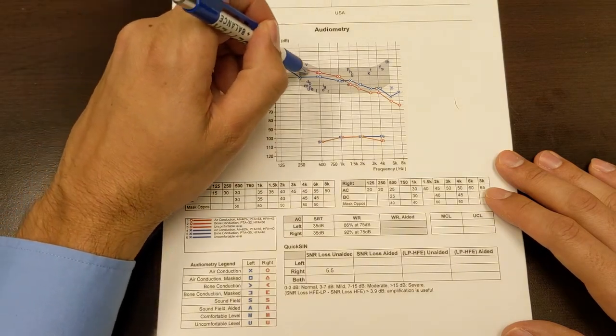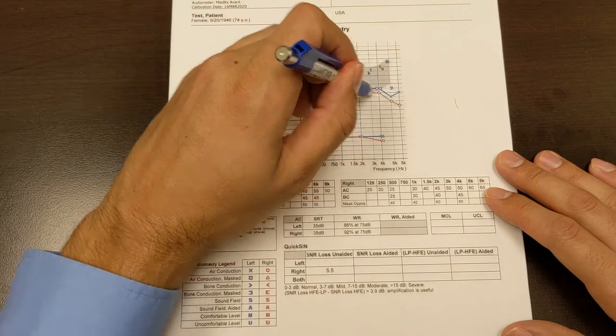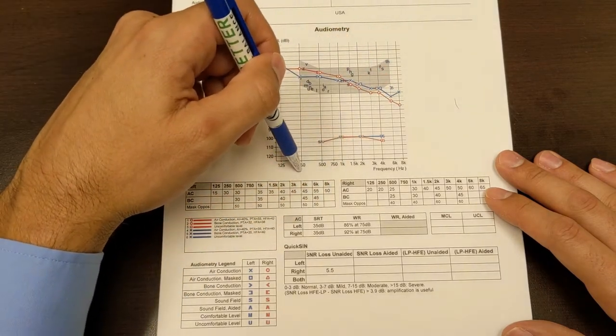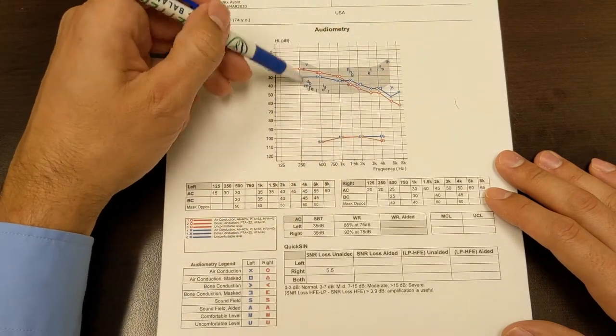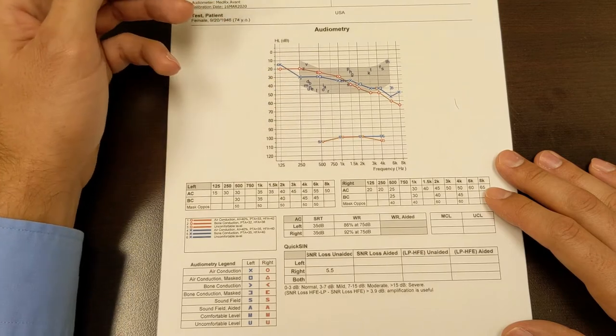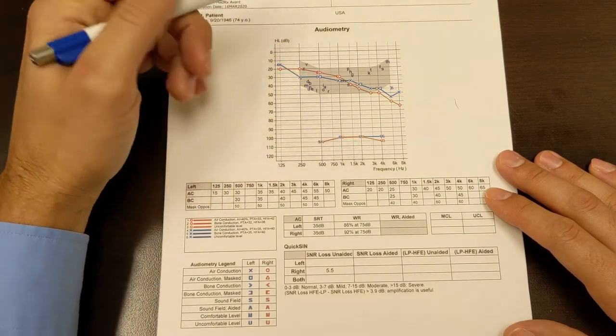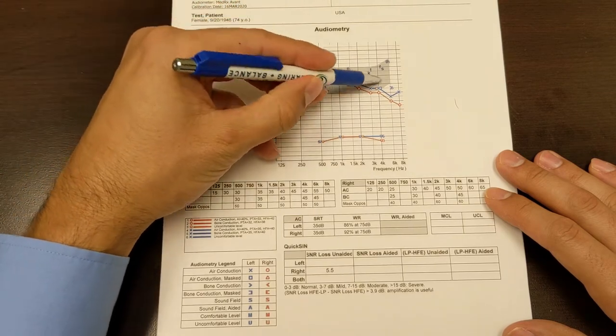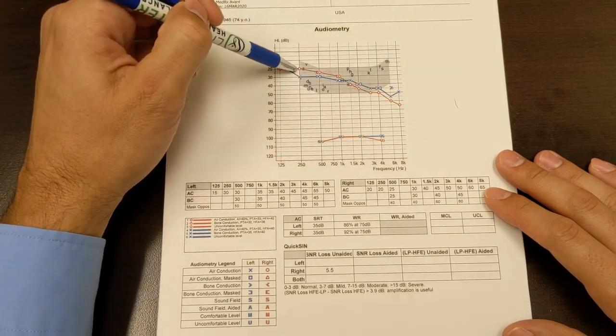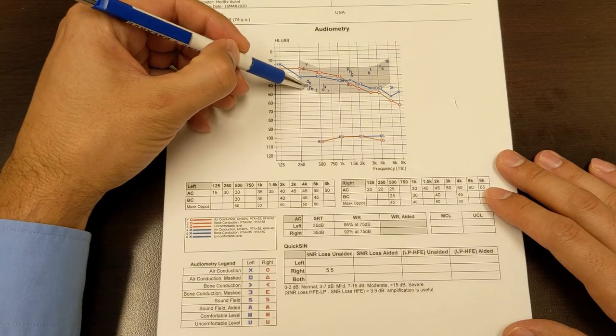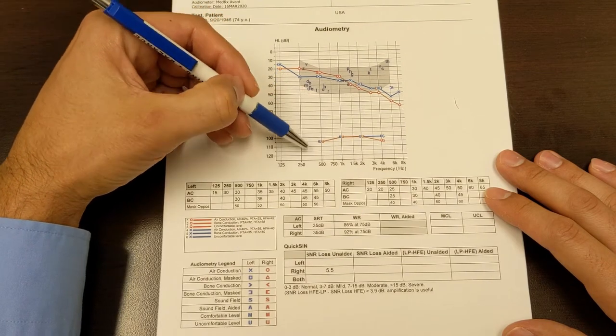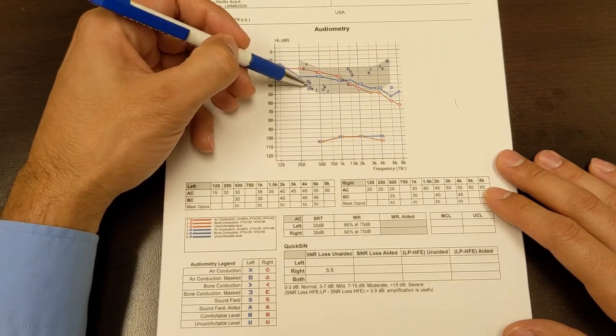And as you go across, you can see that it's not the same at each frequency because only one frequency is going to be tested in each ear at a time. On this particular audiogram, they've placed the speech banana, which is this gray section, and it shows where phonemes occur. And the phoneme that occurs in that frequency range is printed in that range.